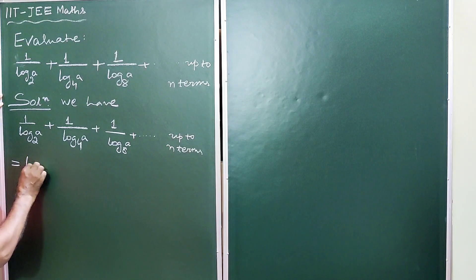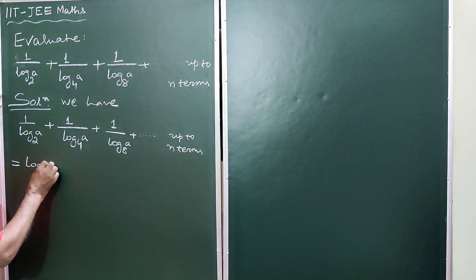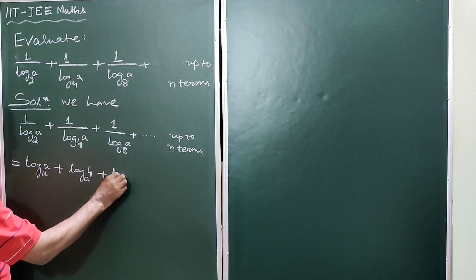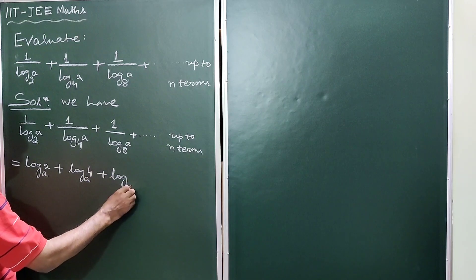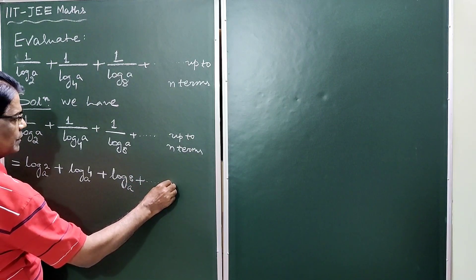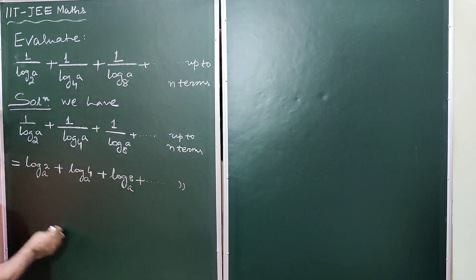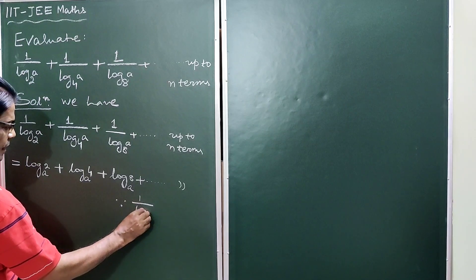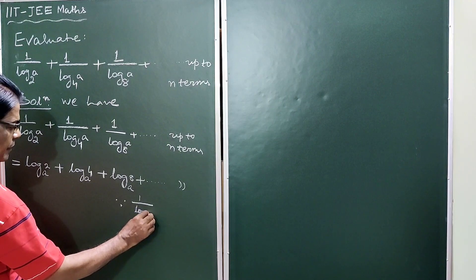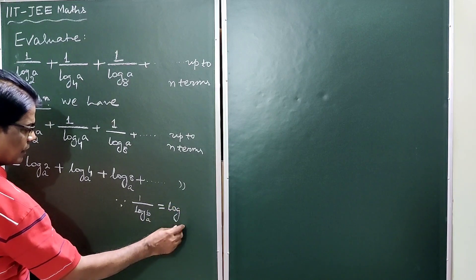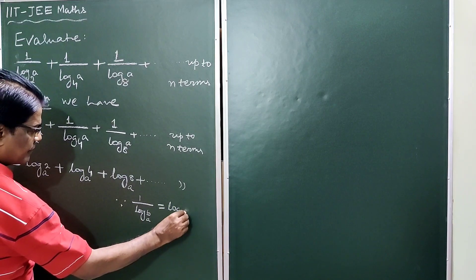This follows since 1 by log base b of a is equal to log base a of b. Using this identity, we convert each term in the series.